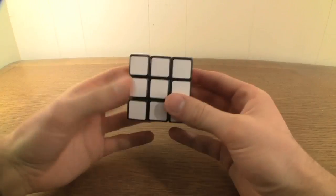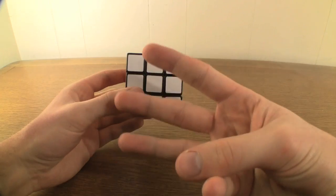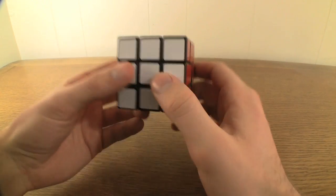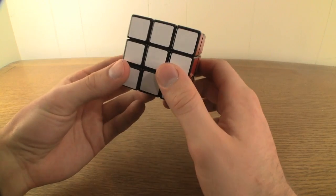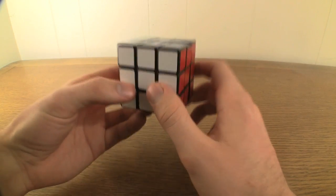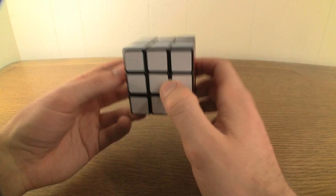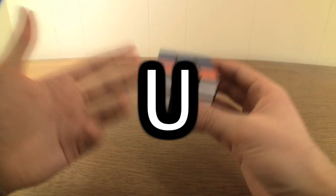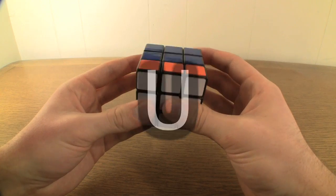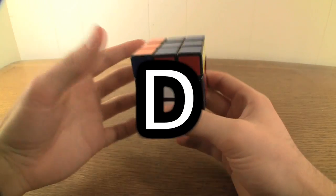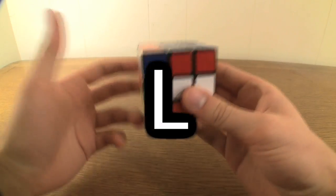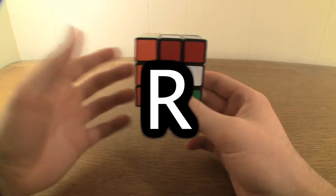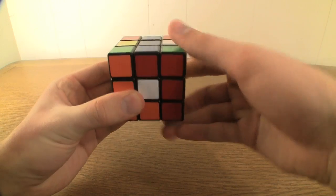Within these algorithms you'll see things noted in three different ways. A plain capital letter represents a 90 degree clockwise turn of the wedge represented by the letter as though we were facing that wedge. An uppercase F for front would look like this. An uppercase U for up would look like this. An uppercase D for down would look like this. An uppercase L for left would look like this. An uppercase R for right would look like this.